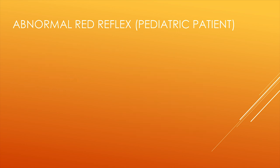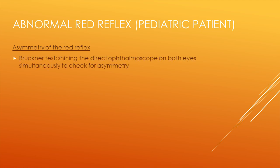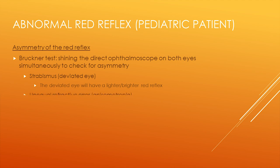Another important aspect of red reflex testing is the evaluation for symmetry between eyes. Asymmetry is considered an abnormal result and is generally evaluated with the Bruckner test, where both eyes are visualized simultaneously with the direct ophthalmoscope. In strabismus, or misalignment of the two eyes, the deviated eye will generally have a lighter and brighter red reflex. If the refractive error is different between the two eyes — termed anisometropia — one reflection may also be brighter than the other. It is especially important to evaluate for these conditions as they both may lead to amblyopia, which is abnormal development of the normal visual pathways.